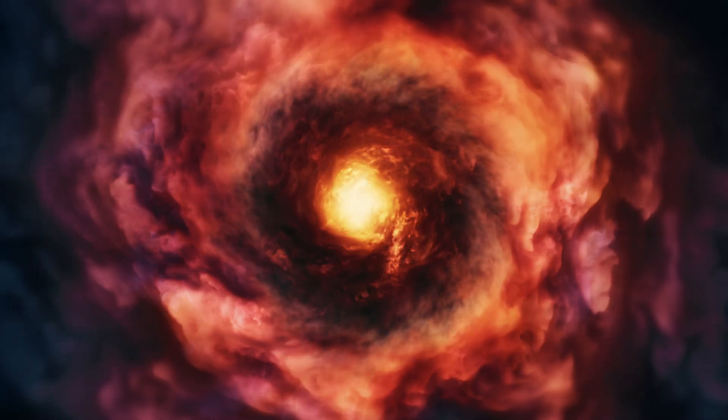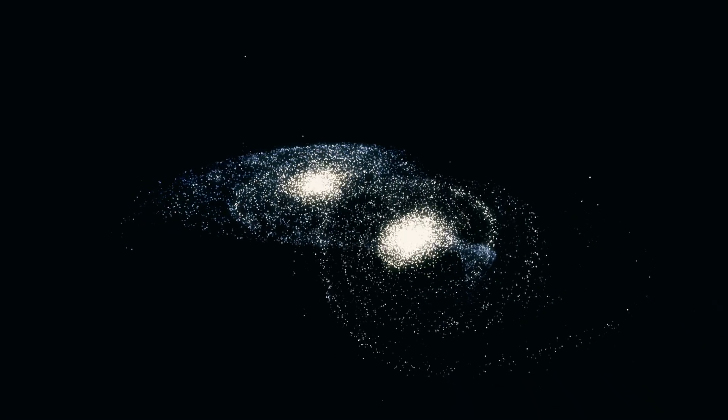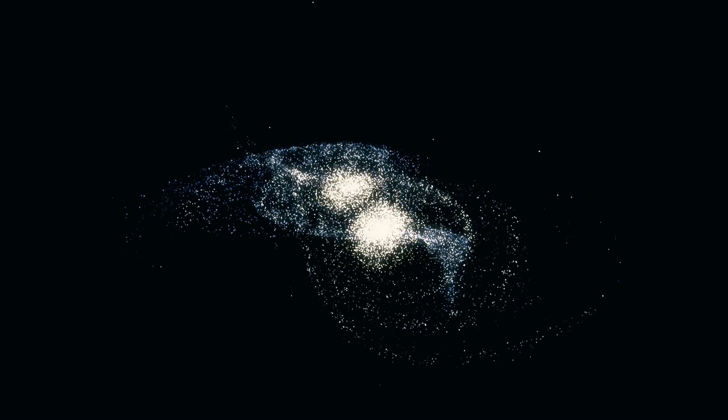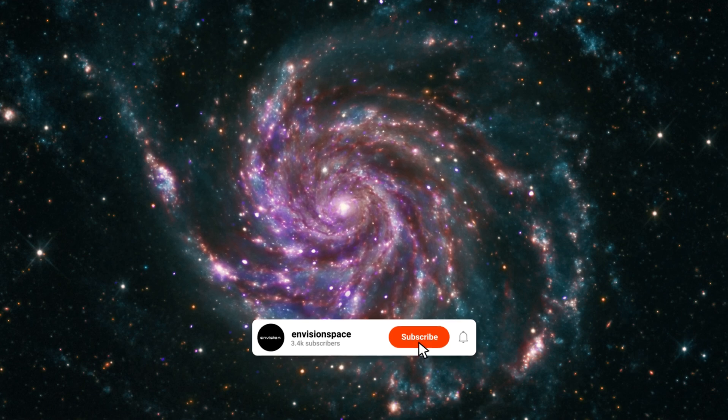The two galaxies' strong gravitational pull will cause them to distort each other's shapes as they get closer to one another. Since the stars are positioned far enough away in both galaxies, it is extremely unlikely that any of them will collide on their own.